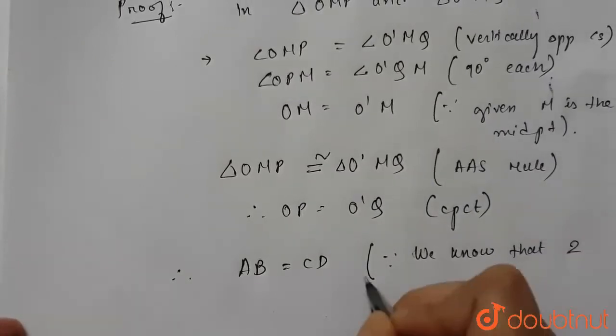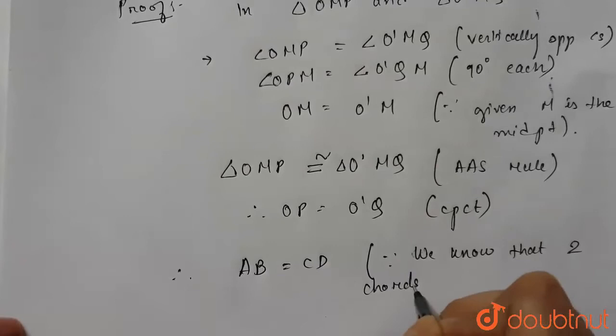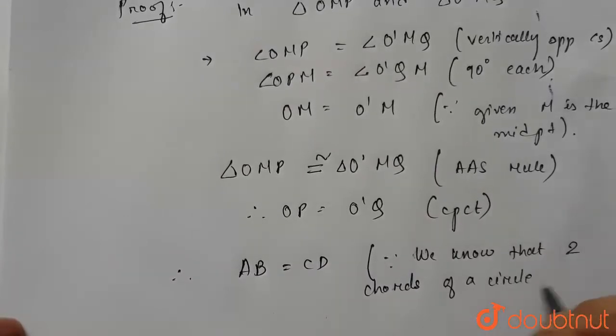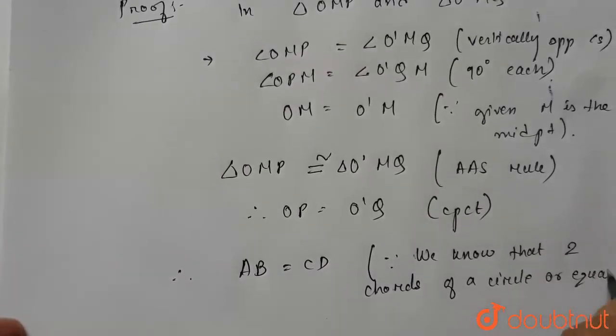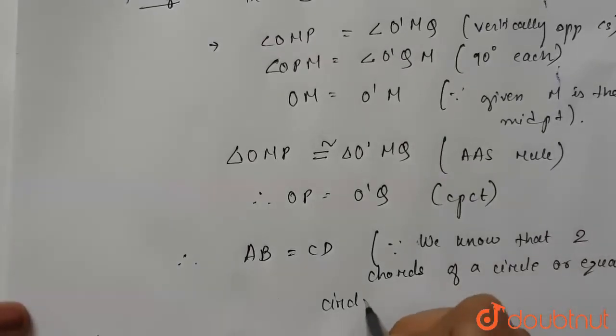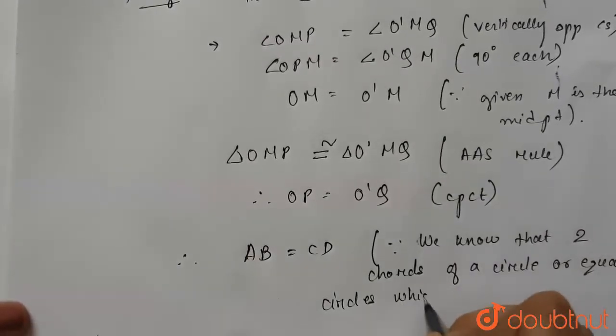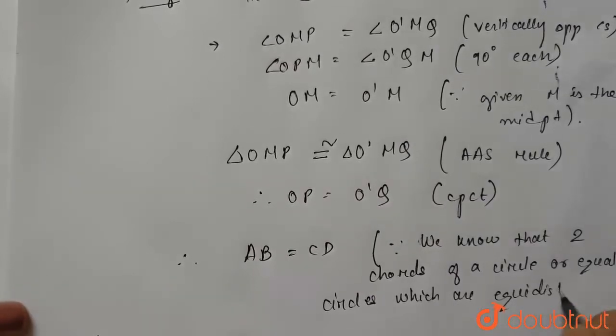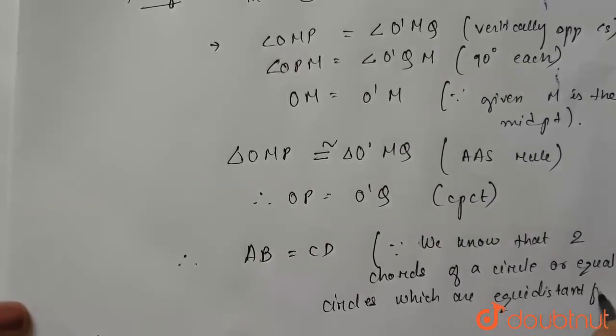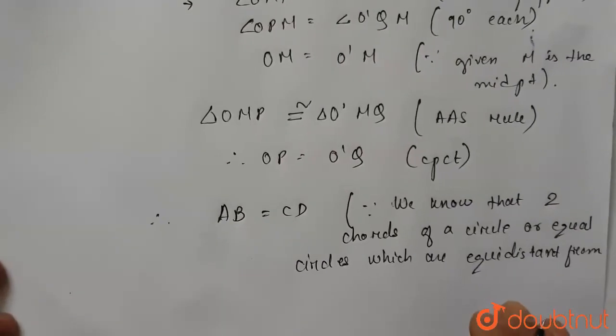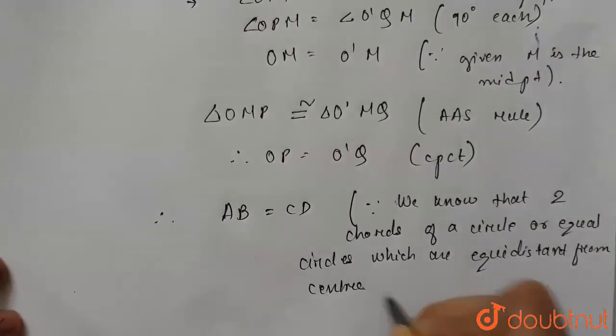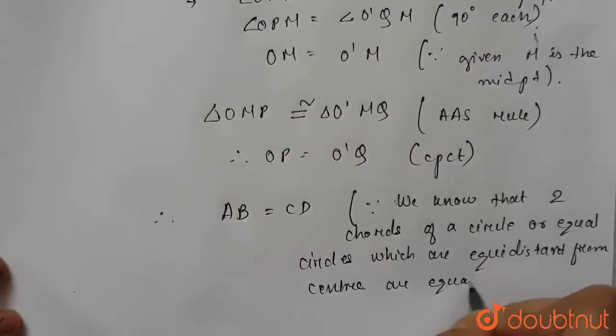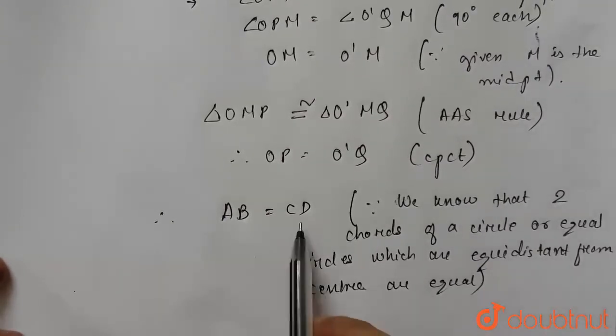...two chords of a circle or equal circles which are equidistant from center are equal. So this is the reason why AB and CD are equal, and this is the required answer. Thank you.